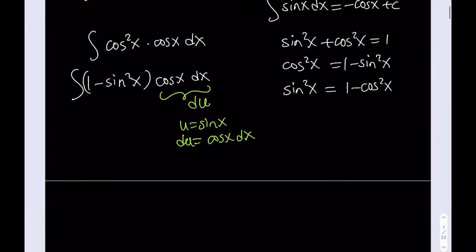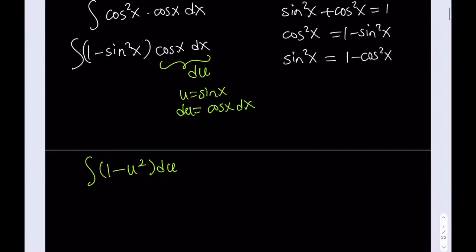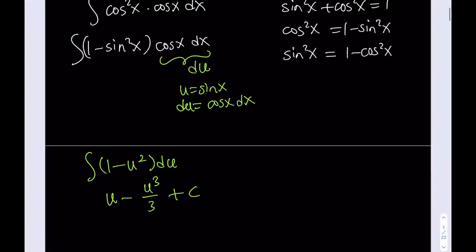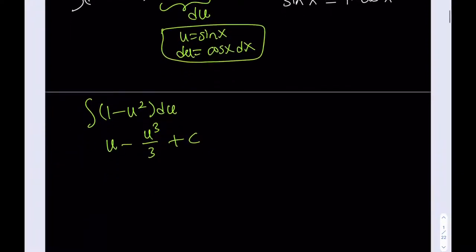Now let's do the replacements. This gives us the integral of 1 minus u squared du. Obviously this is a polynomial, super easy to integrate. You increase the power and divide by that power. So we get u minus u cubed over 3. Now I back-substitute: u equals sine x, giving us sine x minus sine cubed of x divided by 3, plus c.